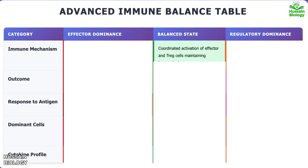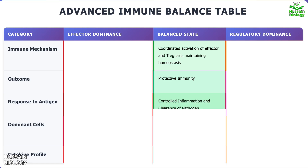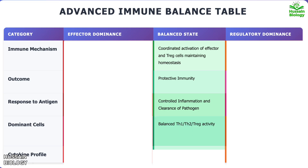In the balanced state, the mechanism involves coordinated activation of effector and regulatory cells maintaining proper homeostasis, resulting in protective immunity. The response to antigen is well controlled, with controlled inflammation and clearance of pathogens. In this situation there is a perfect balance between Th1, Th2, and Treg cells, and cytokine levels also remain balanced.